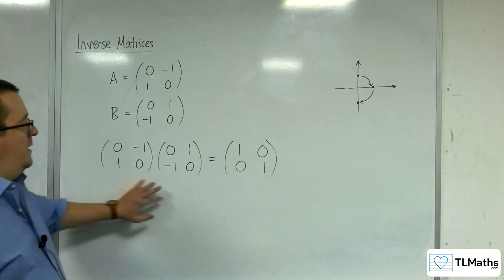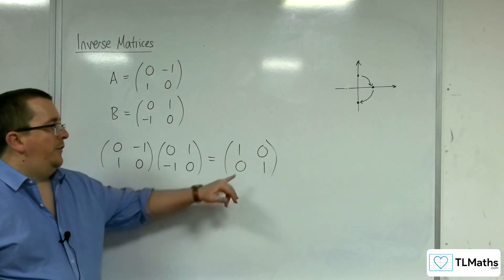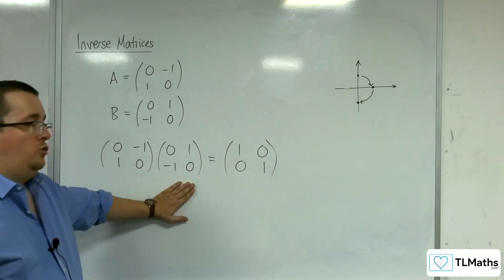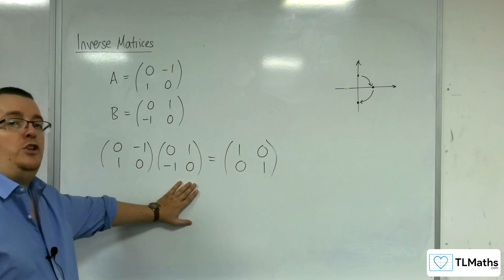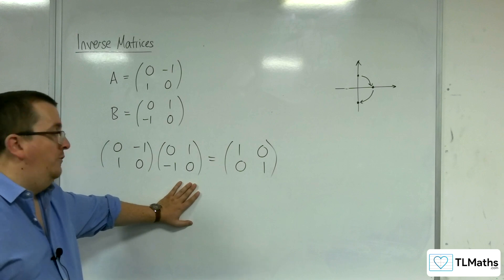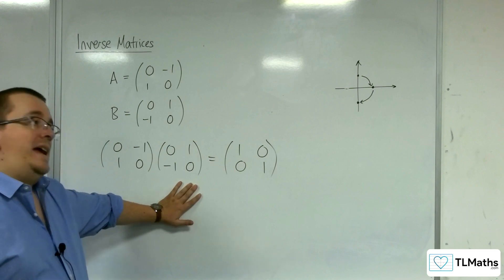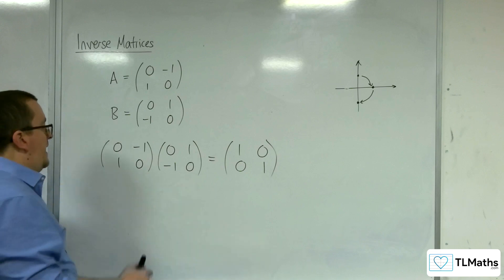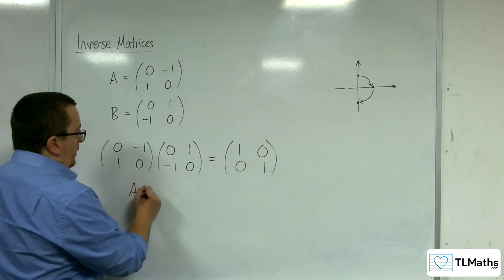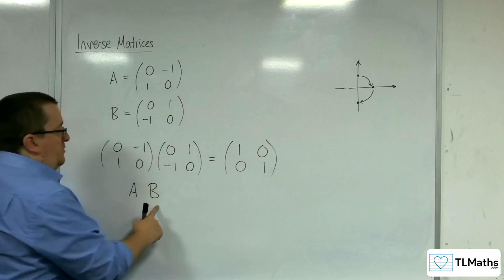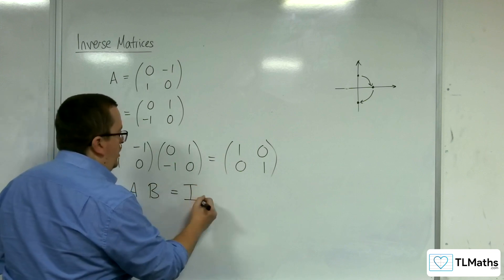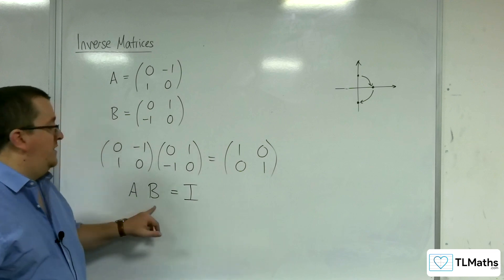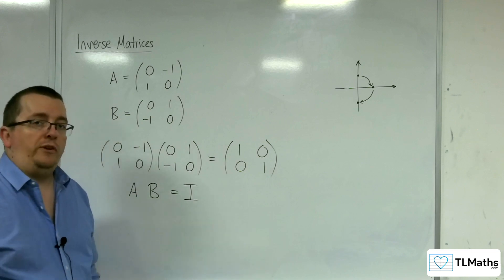So applying these two matrices together gets us the identity matrix, which makes sense because these two transformations would reverse one another. They invert one another, and hence they are inverse matrices of one another. So the idea here is that if A times B is equal to the identity matrix I,